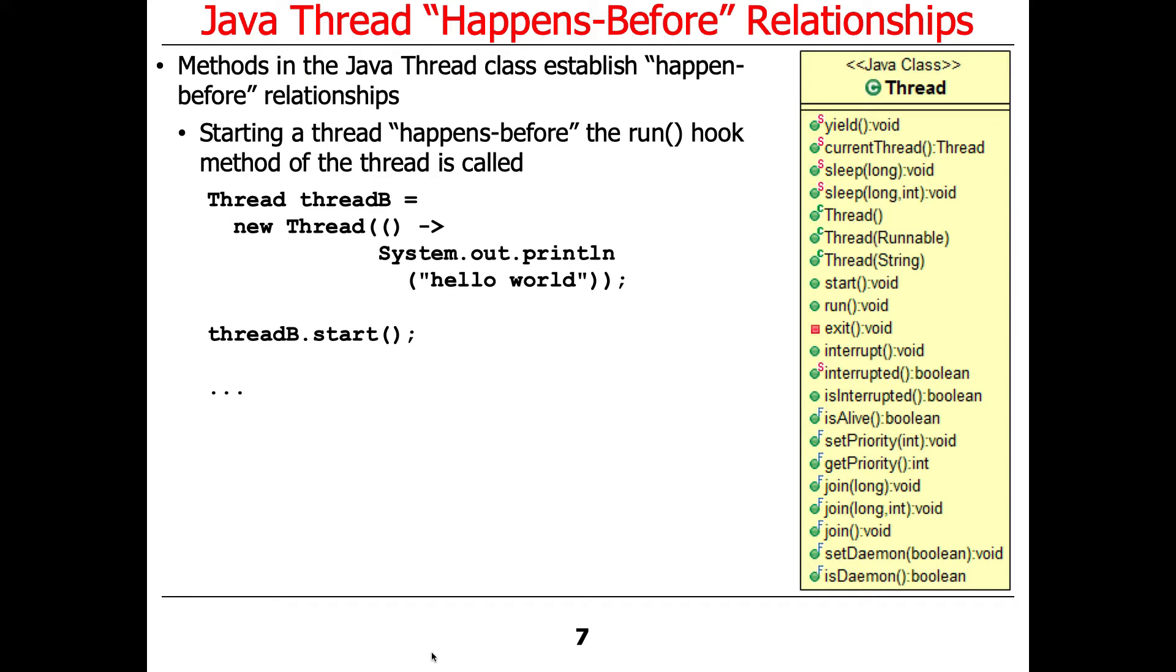Here's a simple example. We have thread B, which is going to be set to this particular lambda expression, just printing out a value, or printing out hello world.